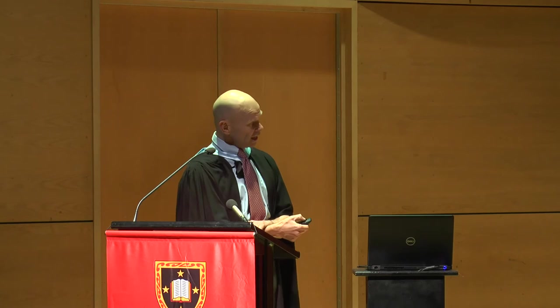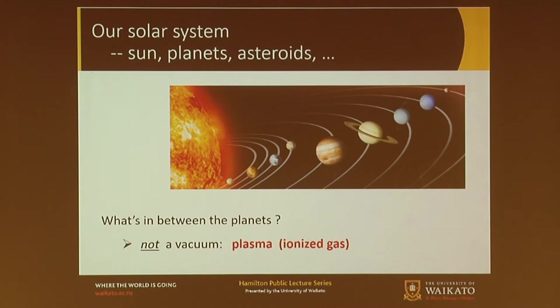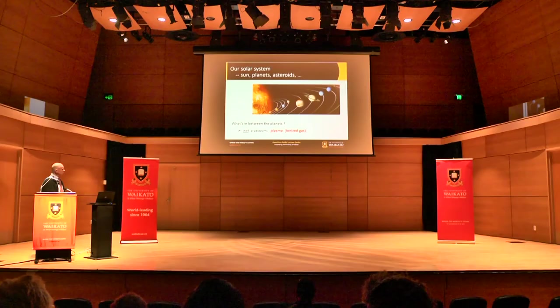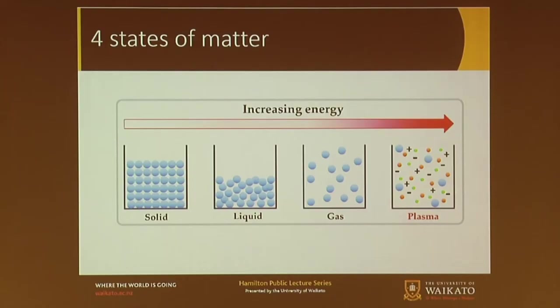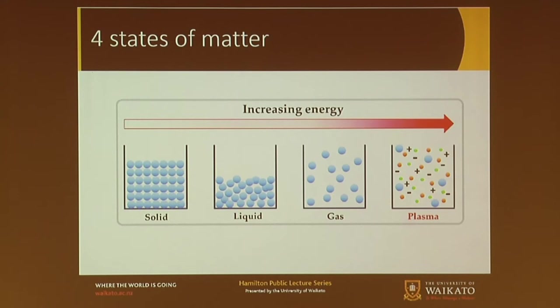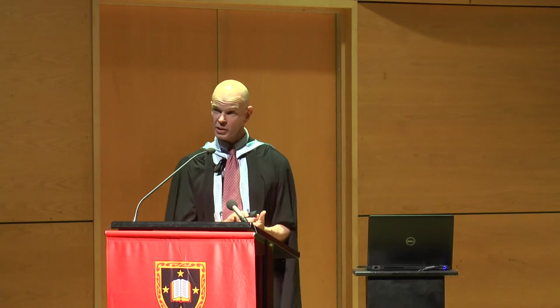It looks like there's empty space between all the planets, but that's not really what it is. It's actually full of stuff called plasma. There are four states of matter: solid, liquid, gas, and plasma. If you take water and put it in the freezer you get ice; heat it up and you get liquid; keep heating and you get steam — that's a gas at about a hundred degrees. If you keep heating water up to about ten thousand degrees, you'd start ripping the atoms to bits and ripping the electrons off. That ionised gas where the electrons come loose is called a plasma, and all of the stuff on the sun is in that state.